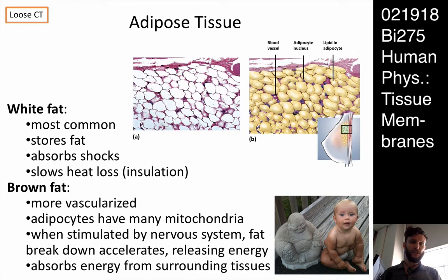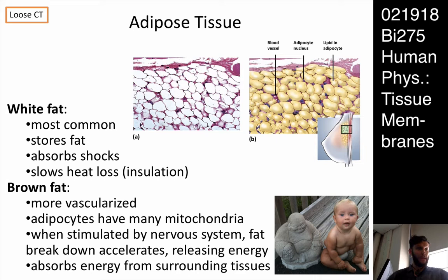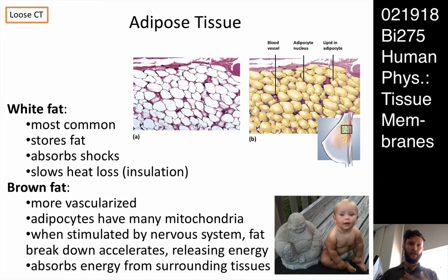White fat stores energy, absorbs shock, acts as insulation, and is found throughout the body in different places — first of all in the most superficial layer of fascia, the connective tissue layer beneath the dermis, in the hypodermis. You can also find it in structures like the omentum, which is this fatty skirt that hangs beneath the rectus abdominis muscles and covers the abdominal viscera. This is how you can get those weightlifter people with actual abs but huge bellies — they have a lot of fat in their omentum but not in the superficial layer.